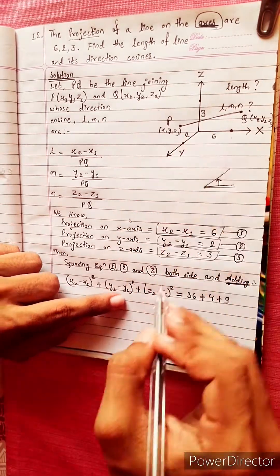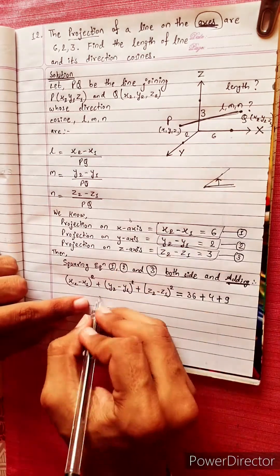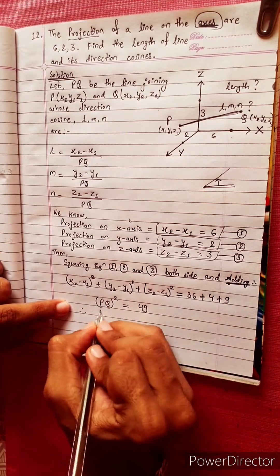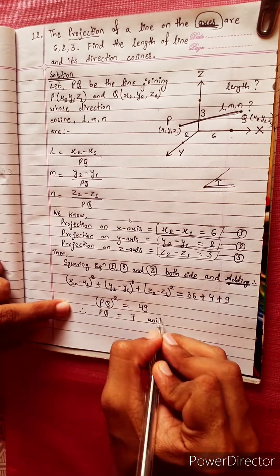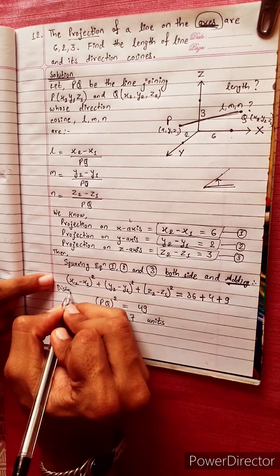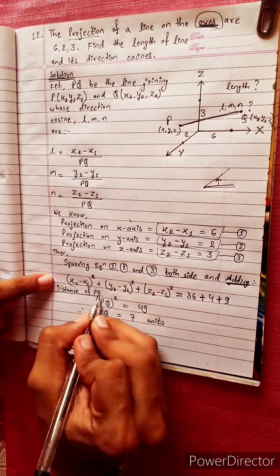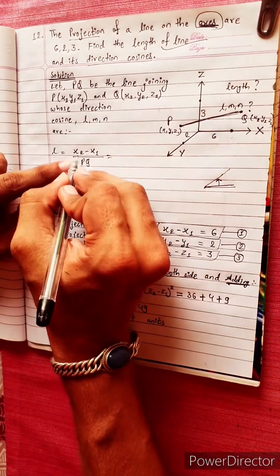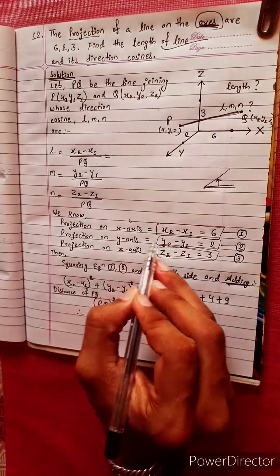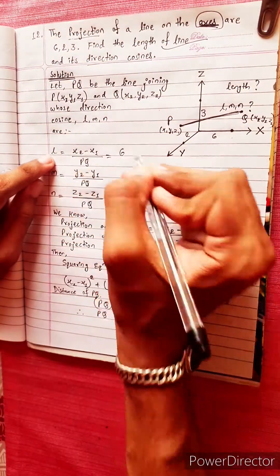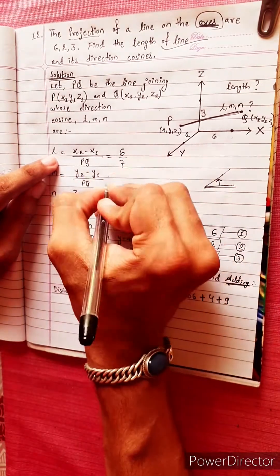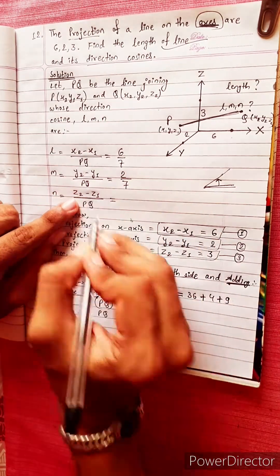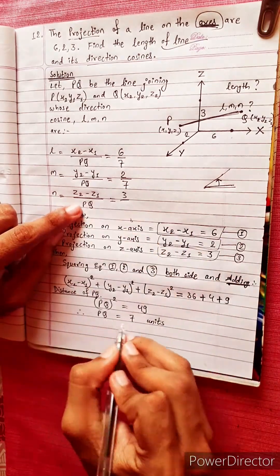This equals (x2 minus x1) squared plus (y2 minus y1) squared plus (z2 minus z1) squared, which equals PQ squared. Using the distance formula, the distance PQ equals 7 units. So l equals (x2 minus x1)/PQ equals 6/7, m equals (y2 minus y1)/PQ equals 2/7, n equals (z2 minus z1)/PQ equals 3/7.